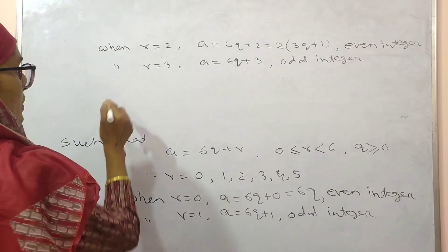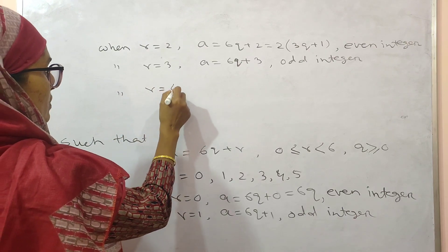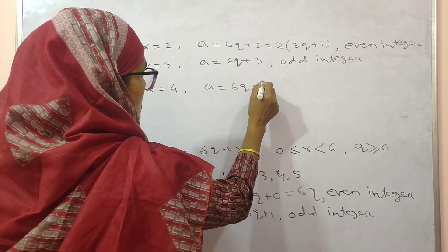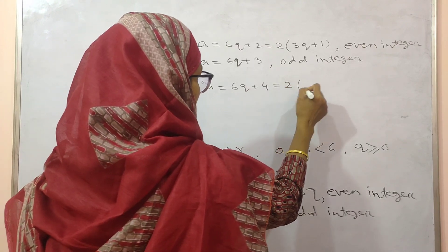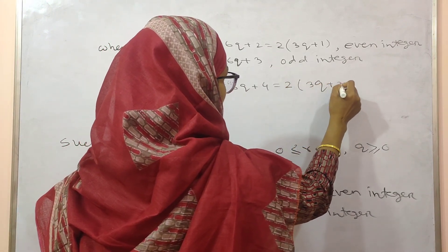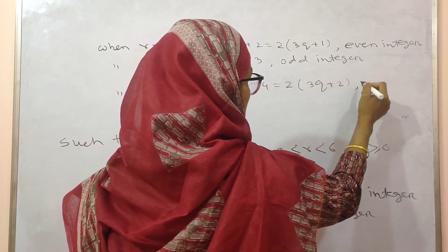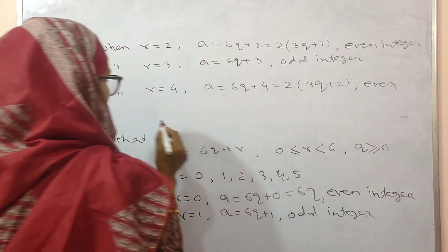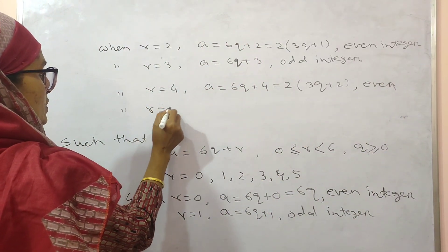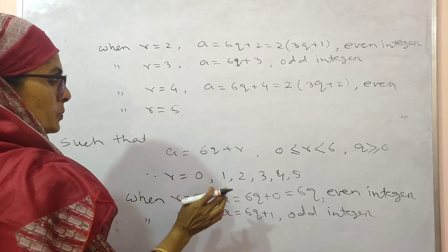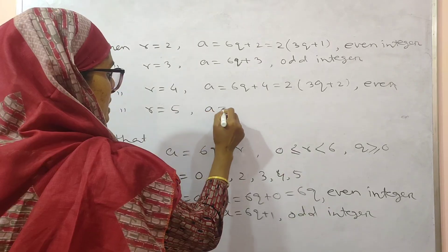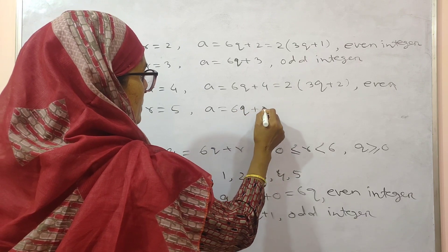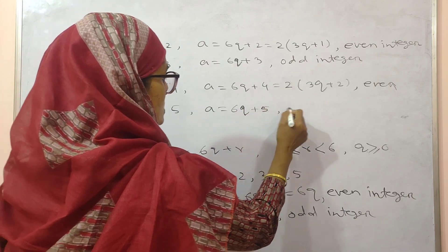Similarly, when r equal to 4, you will get A equal to 6q plus 4. If you take 2 common, you will get 2 into (3q plus 2), which is an even integer. When r equal to 5, you have A equal to 6q plus 5, which is odd.